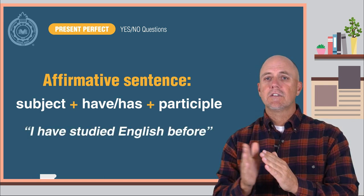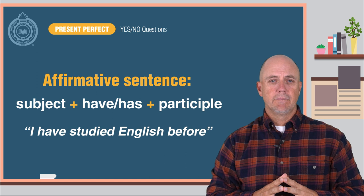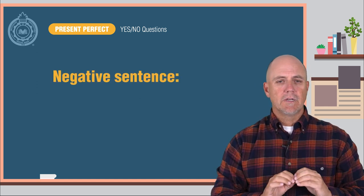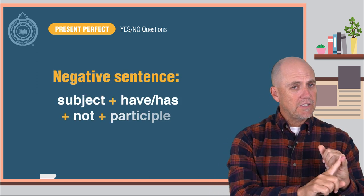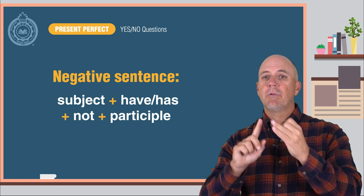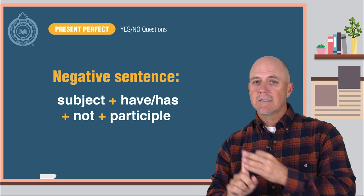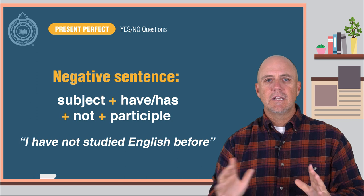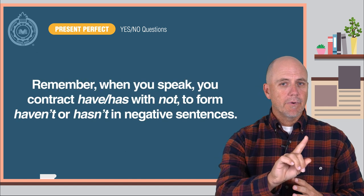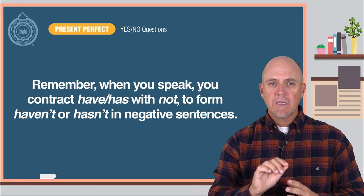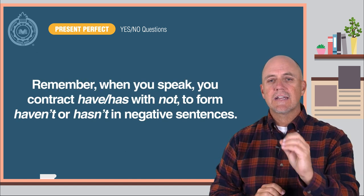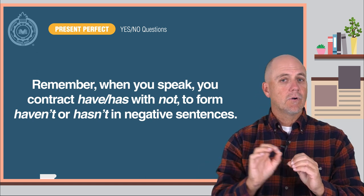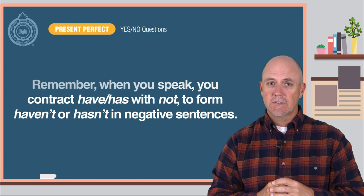For example: 'I have studied English before.' For a negative sentence, the formula is: the subject, plus have or has, plus not, plus the participle. For example: 'I have not studied English before.' Remember, when you speak, you contract 'have' or 'has' with 'not' to form 'haven't' or 'hasn't' in negative sentences.